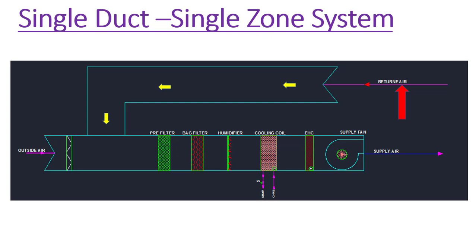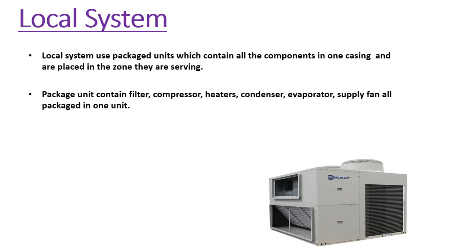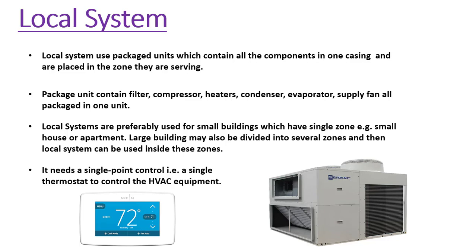That covers the single duct single zone system, where an AHU serves a single zone such as a small office, home, or part of a large building. Regarding local systems, packaged units contain all components in one casing and are placed in the zone they are serving. Package units contain a filter, compressor, heaters, condenser, evaporator, and supply fan — all packaged in one unit. Local systems are used for small buildings with a single zone, and a single thermostat can be used to control the HVAC equipment.